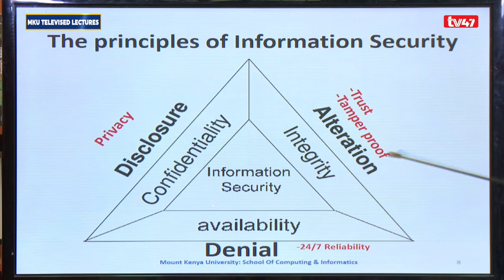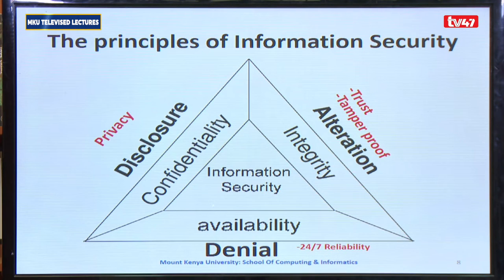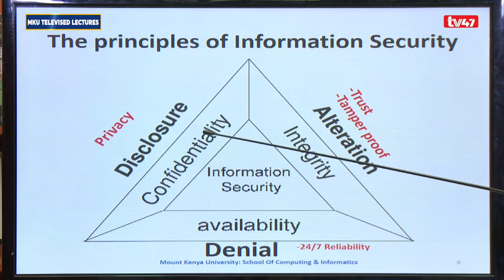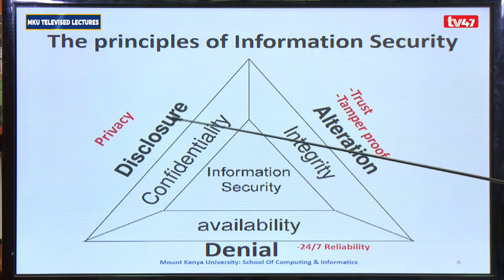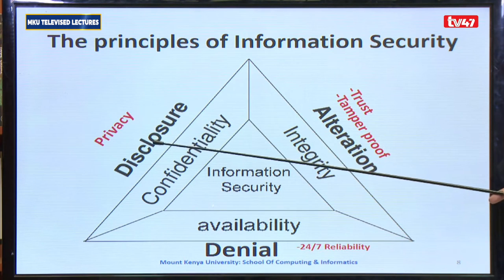We start with confidentiality. Confidentiality of any information means: is the data private? Do we have privacy of the data? Is it intended, or has it reached the intended recipient? If that is compromised, it leads to what we call disclosure of information.